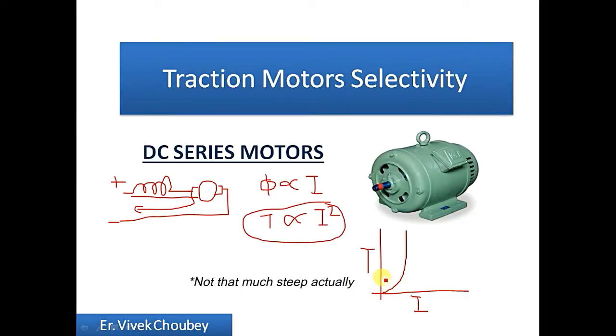This is the characteristic of a DC series motor. You can see that even for a small amount of current we're getting a huge amount of torque until the motor gets saturated, the field gets saturated.